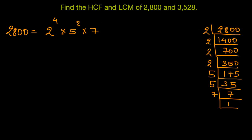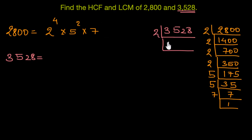Similarly, now let's prime factorize 3,528. So how would this look like? 3,528. Since this is an even number, we can start with 2. So this would give us 2 1s are 2, 2 7s are 14, 2 6s are 12, and 2 4s are 8. 1,764. Again, an even number. We can divide this by 2.